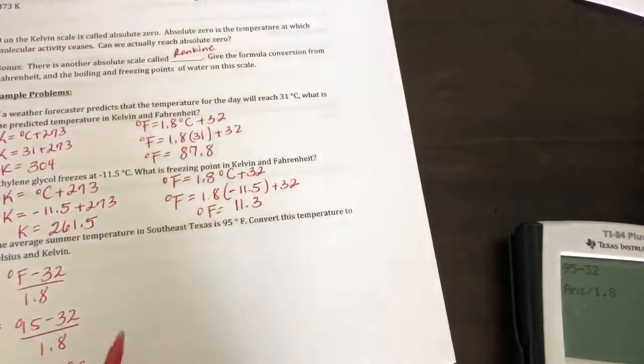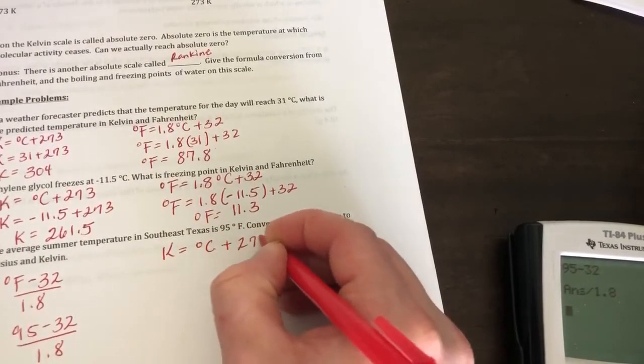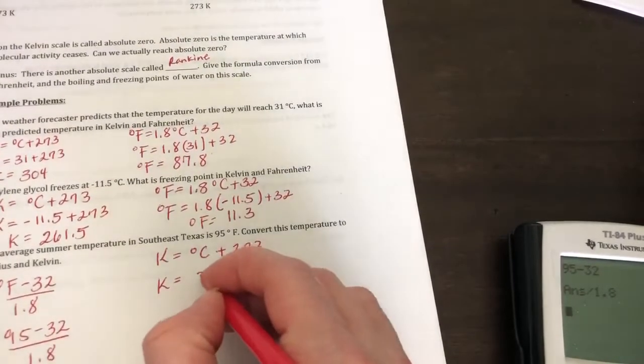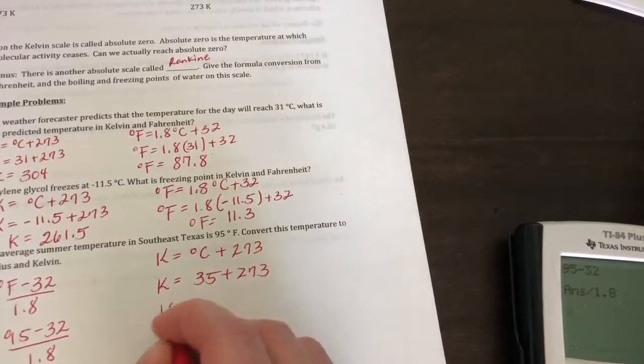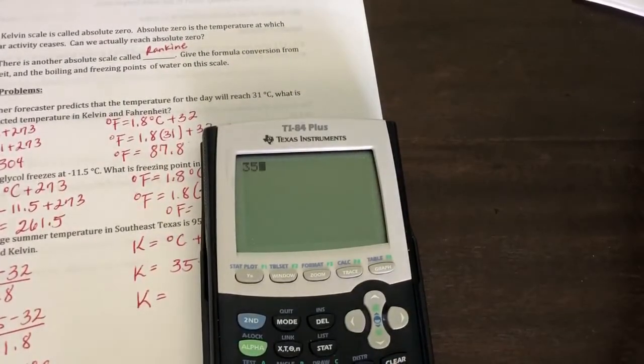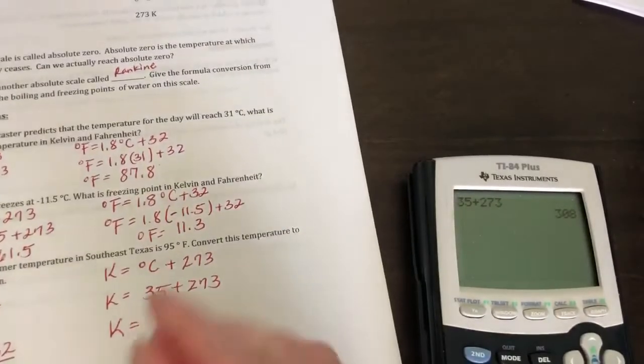Now I want to go to Kelvin. So Kelvin is equal to degrees Celsius plus 273. Okay, so we're going to do 35 plus 273. So 35 plus 273 comes out to be 308 Kelvin.